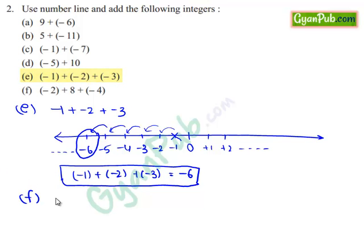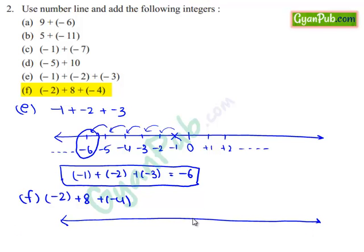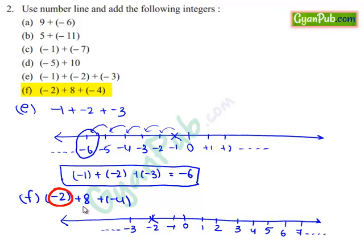Similarly, take down part F: minus 2 plus 8 plus minus 4. To add the given integers minus 2, plus 8 and plus minus 4, we will use a number line. Mark the integers: 0, 1, 2, 3, 4, 5, 6, 7 and so on. To the left of 0 are minus 1, minus 2, minus 3 and so on. First, we will mark minus 2 on this number line. And then we add plus 8, which means we move 8 steps to the right of minus 2: 1, 2, 3, 4, 5, 6, 7 and 8. We reach 6 on this number line.